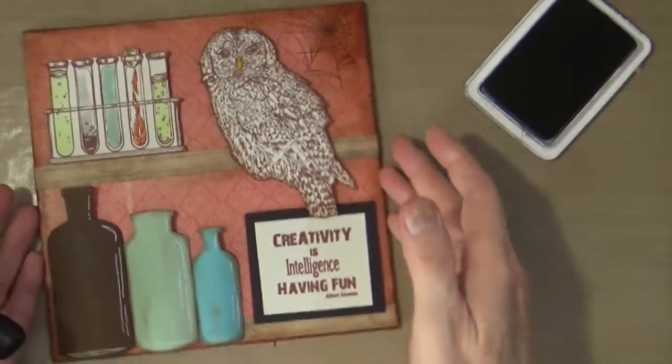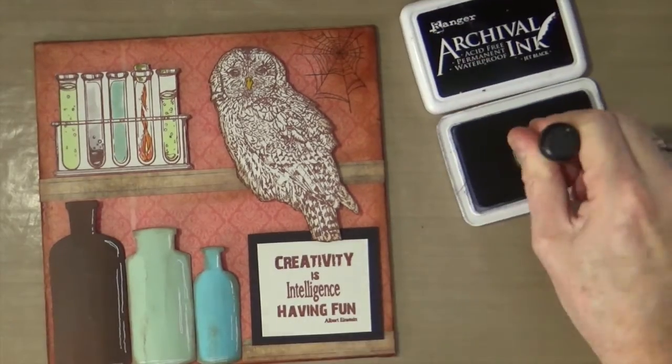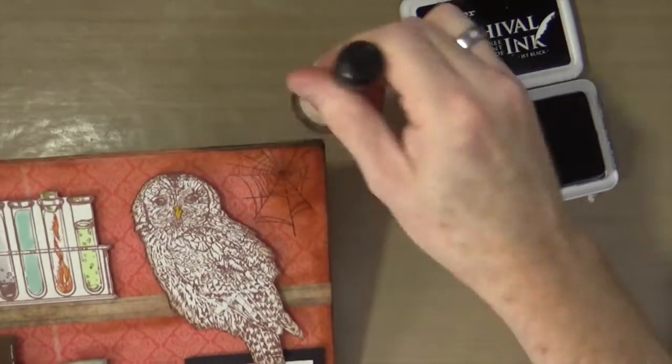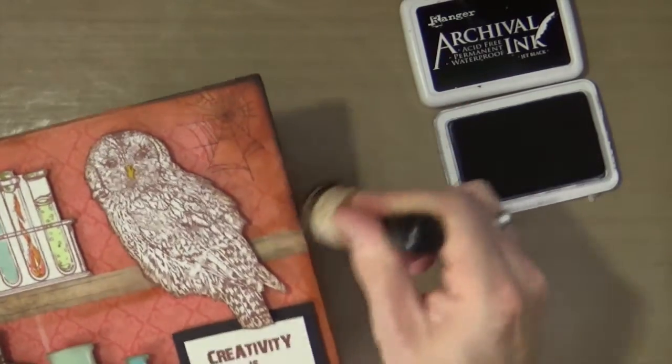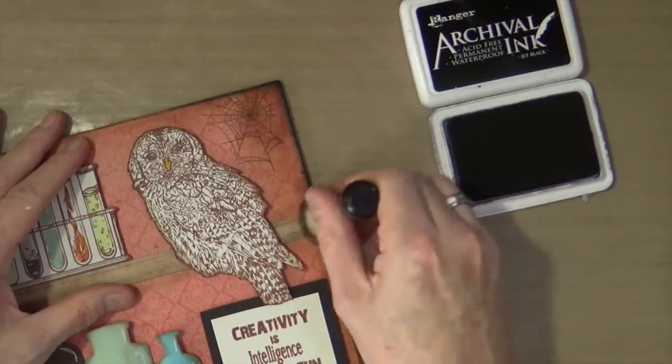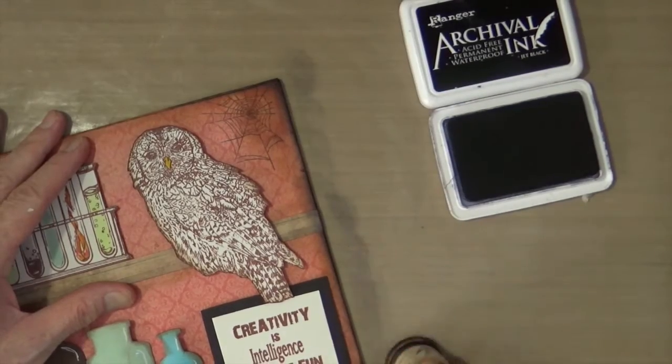While I've still got the jet black archival ink out, I'm using an ink blending foam to go around the edge, just to darken and dirty it a little bit more to make it more grungy.